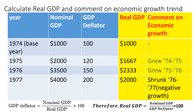I just want to reiterate: when you face a question like this where the year, nominal GDP, and GDP deflator are given, and they are looking for your comment on economic growth, you first have to find real GDP. That formula comes from the GDP deflator formula: GDP deflator equals nominal GDP over real GDP times 100.